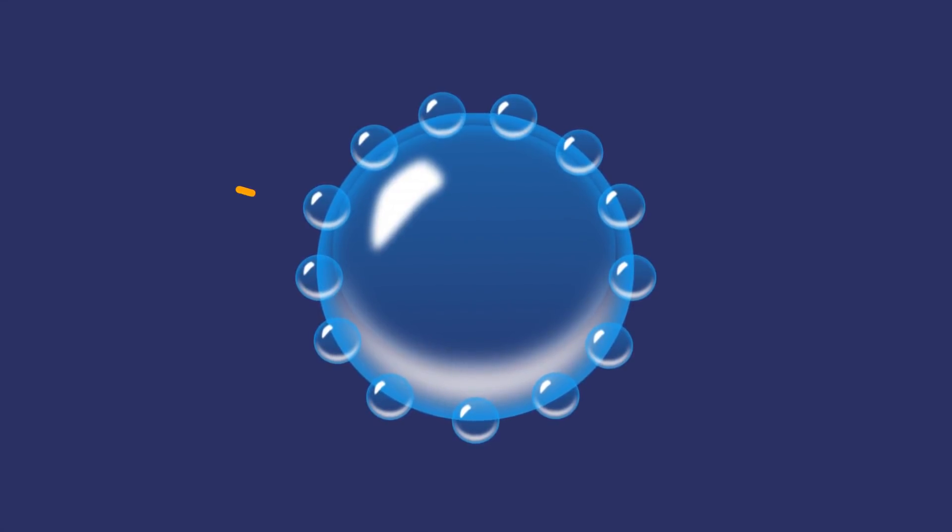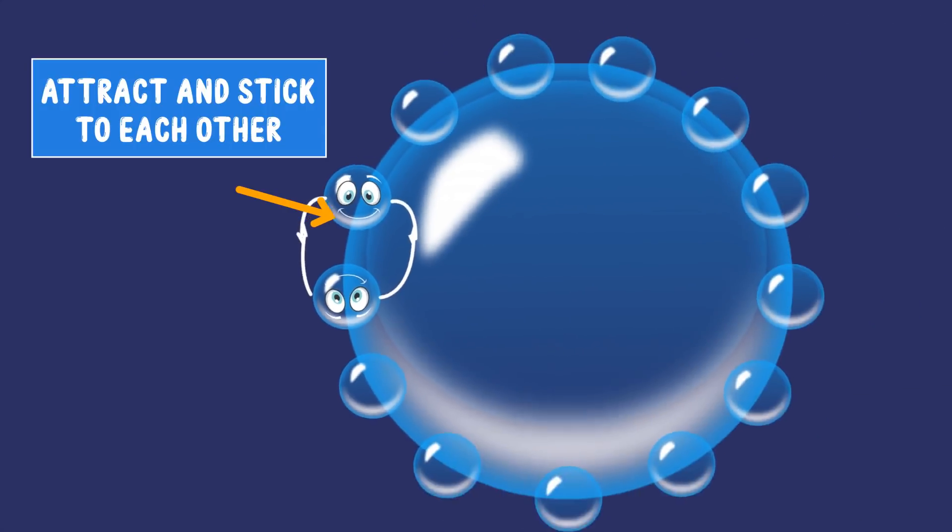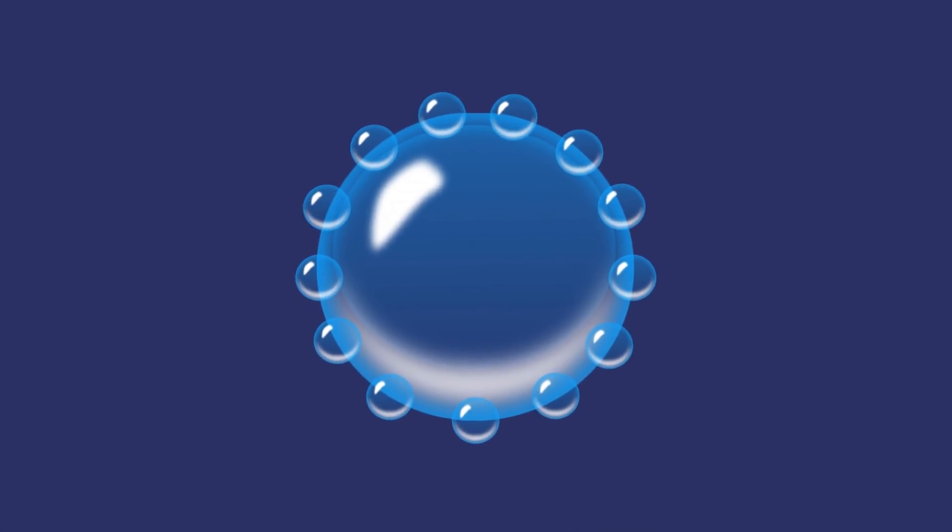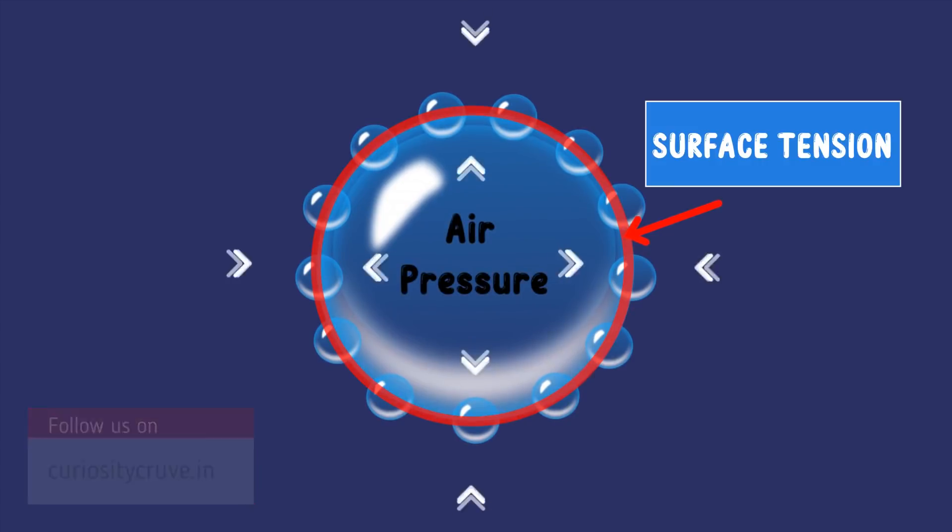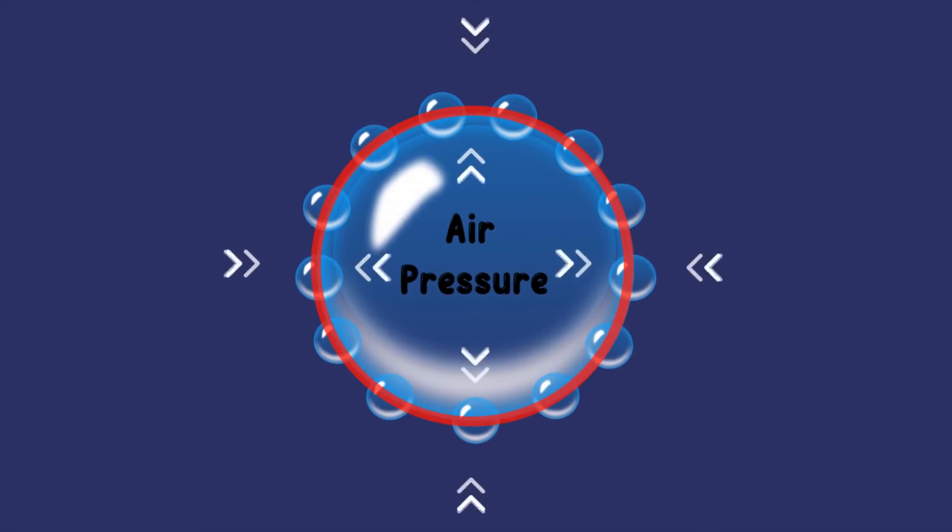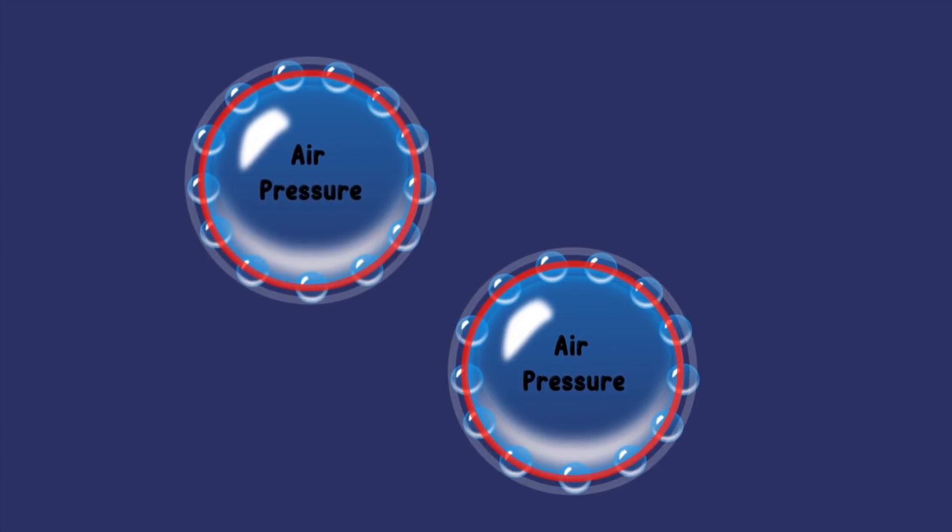Water molecules attract and stick to each other. These attractive forces between water molecules produce what's called surface tension. This surface tension, along with the air pressure from inside and outside the bubble, creates a fragile equilibrium and keeps the bubble from popping.